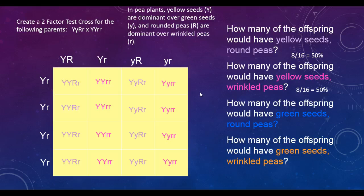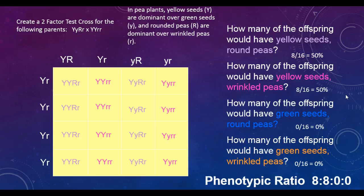That means that our last two, green seeds and round peas, green seeds and wrinkled peas, would have zero out of 16 because we have used all our possible outcomes in the first two. When we look at this, we would have a phenotypic ratio of 8 to 8 to 0 to 0, meaning that we have eight outcomes with the dominant-dominant scenario, eight outcomes with the dominant-recessive scenario, and then zero for both the recessive-dominant scenario and the recessive-recessive scenario.